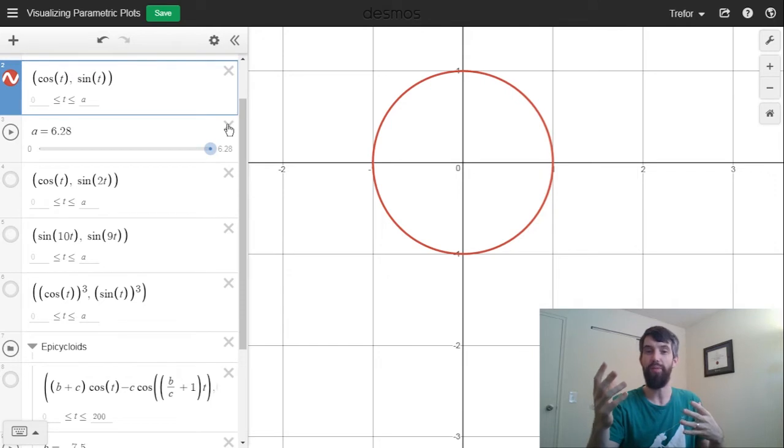So the parametric curve where the x is given by cos of t and the y is given by sine of t, that plots out a circle. And one thing that I can do is, if you see down in this description, it says that cosine and sine are being plotted for all values of t between 0 and a, and then I have that a is at 6.28, aka 2 pi.